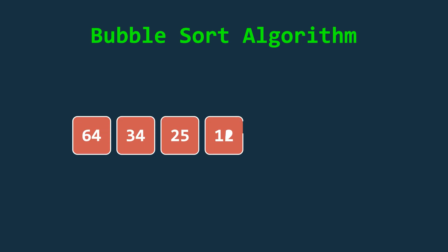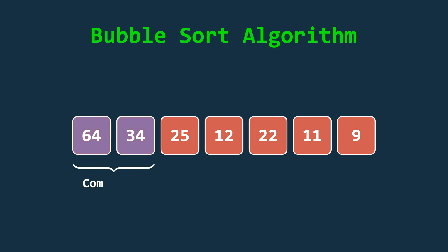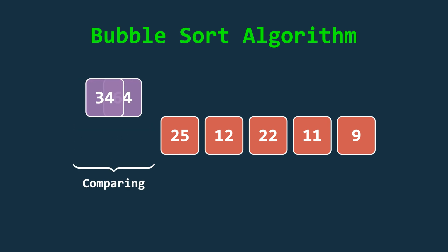In bubble sort, the core idea is to compare each pair of neighboring elements starting from the beginning of the array and swap them if they are out of order.